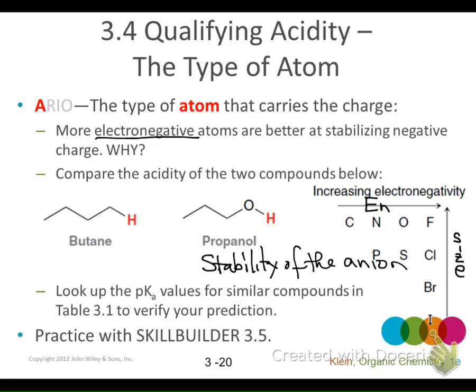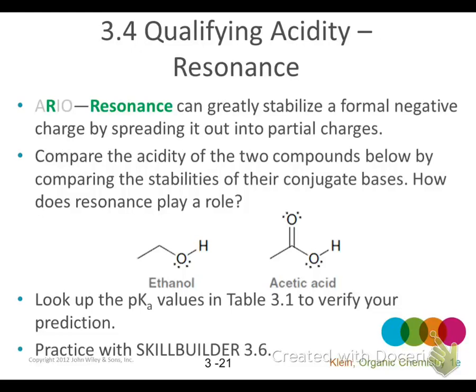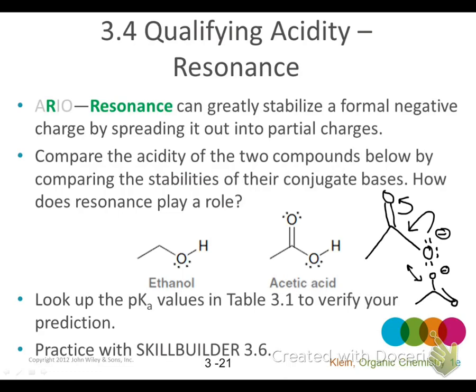If I were to draw the resonance structure — look at the anion. The anion looks like this. What can it do? It can take this pair of electrons and delocalize it. Its resonance structure looks like this, and these two resonance structures go back and forth. Why does that make it more stable? Why is it a stronger acid? Because it can spread the charge density out. As soon as you spread the charge density out, you're more stable. Resonance allows the spreading out of charge density, allowing the molecule to be more stable.